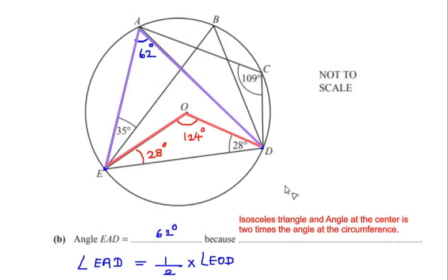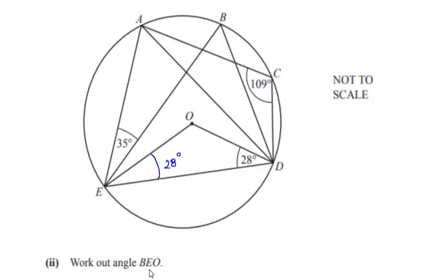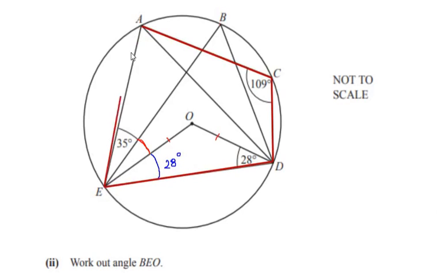Moving on to the last part: work out angle BEO. We can see that BEO is this small angle here. I have marked the 28 degrees for angle OED because triangle OED was isosceles. To find this we consider the cyclic quadrilateral ACDE.